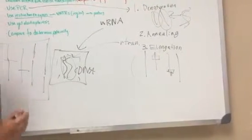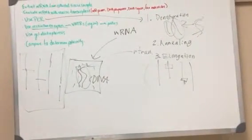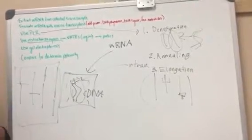So then once you add the probes, you have your VNTRs. From the VNTRs, you're then going to put it through gel electrophoresis.